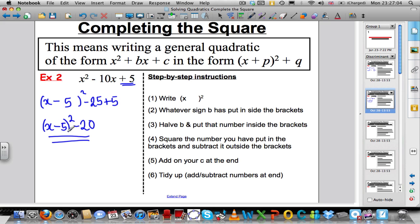That is your completed square form. Again, if I multiplied this out and collected like terms, I would get the original expression. Here, my p is -5 and my q is -20.